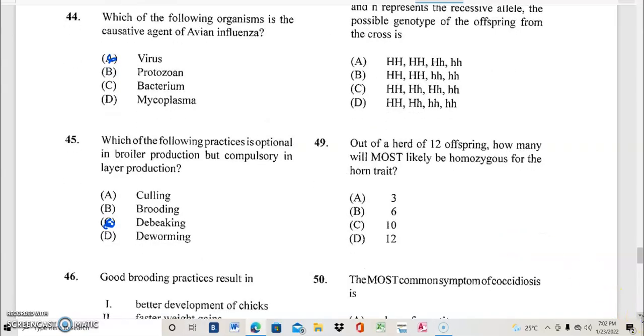Question 49. Out of 12 offspring, how many will most likely be homozygous for the horn trait? And if your answer to question 49 is A, 3, you are very correct.